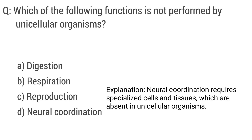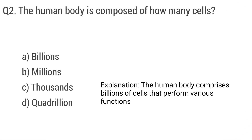Question 1: Which of the following function is not performed by a unicellular organism? The right answer is option D: neural coordination. Question 2: The human body is composed of how many cells?